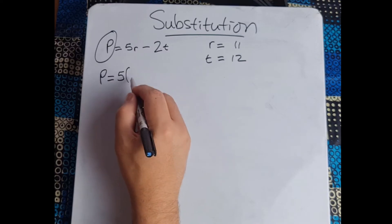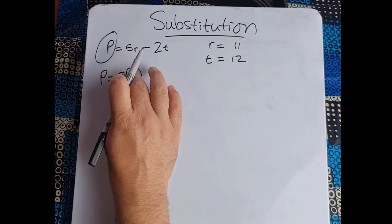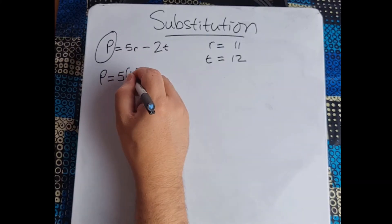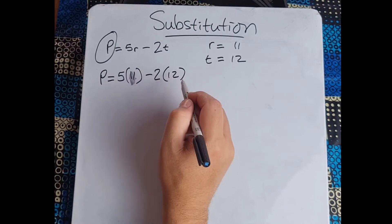Okay, so again guys we just break it down. P equals 5, and remember when it's glued together, when they're married like it, it's actually saying that it's multiplied by that. R equals 11 minus 2t, that is going to be 12.